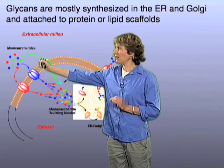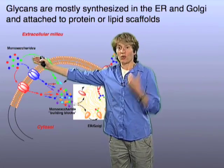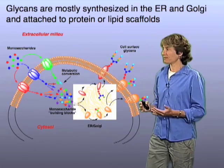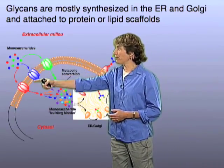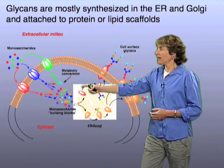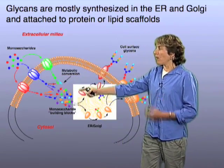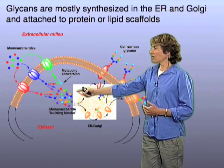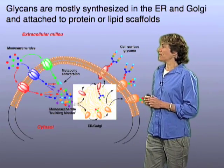These are simple sugar molecules. So you eat food, the food has sugars in it, and your cells take up those simple sugars. Now, inside the cell, the monosaccharide building blocks are processed by enzymes.